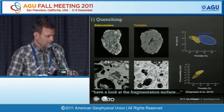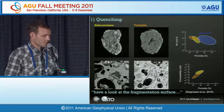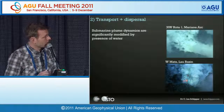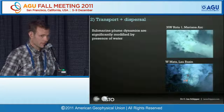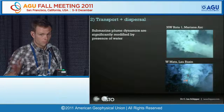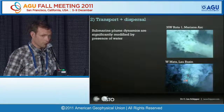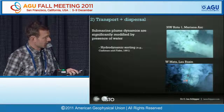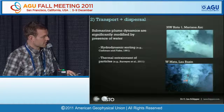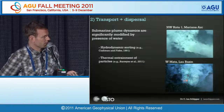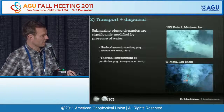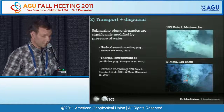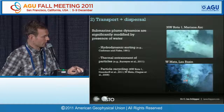The nice thing submarine pyroclasts are telling us is that they invite us to look at the fragmentation surface, so we don't have to sort out which textures developed in the plume versus on the way to fragmentation. It gets more complicated when looking at transport and dispersal, because water is denser and more viscous than air, modifying a submarine plume in many ways — including hydrodynamic sorting, entrainment of small particles into thermal submarine plumes, and particle recycling.